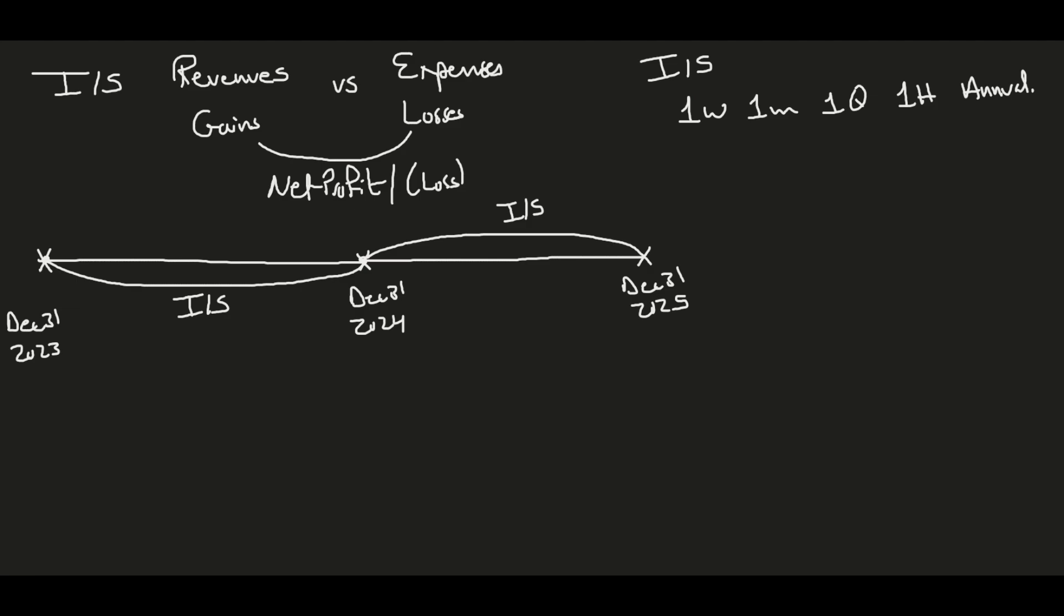This brings me to the second statement - the balance sheet. A balance sheet is a statement that shows what the company owns versus what the company owes to others. We're looking at assets versus liabilities and equity. Assets should always equal liabilities and equity.